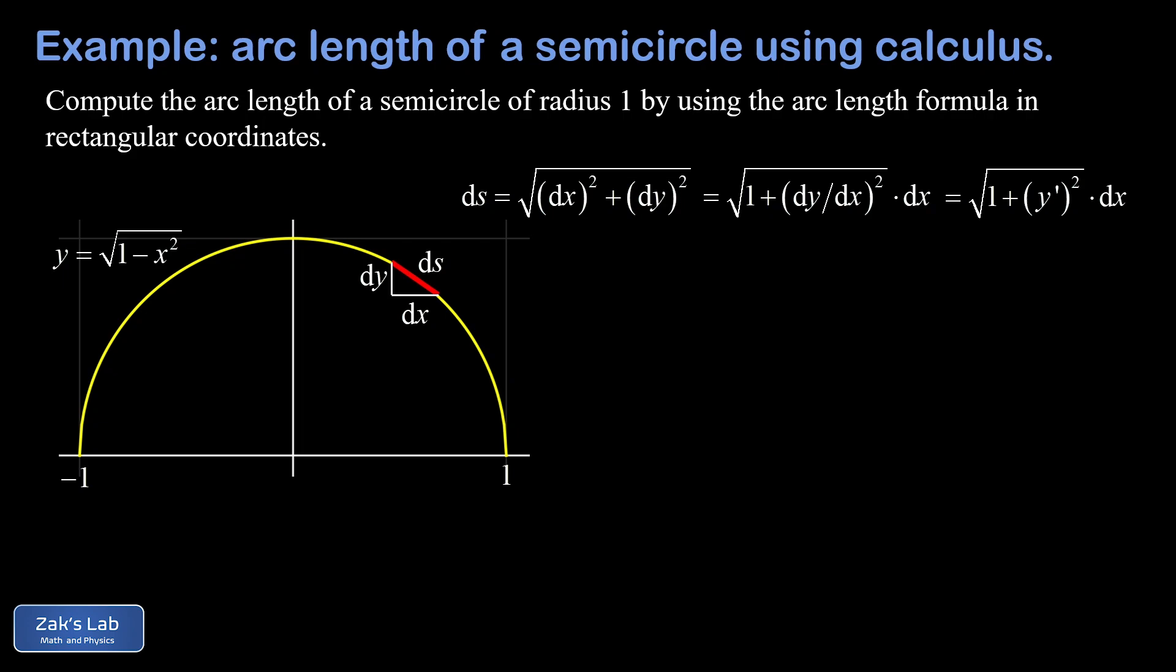To get a small arc length increment, I take the square root of one plus the derivative of our function, then multiplied by dx. And then we'll just add up all the arc length increments by using integration.